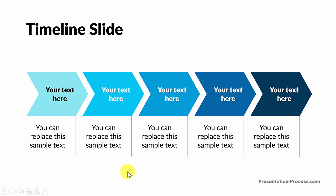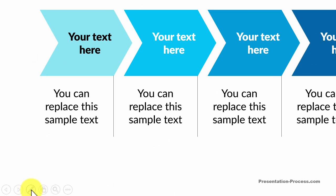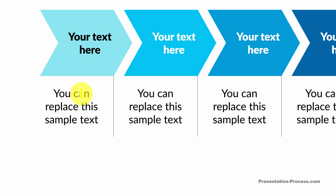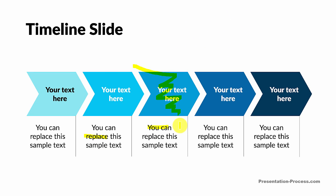One last trick to help you make a lasting impression is the ability to use a highlighter. Move your cursor to the bottom edge of your slide and then to the left, and you will see an option. Click on it and you will find the highlighter option. Click on it and your cursor turns into a highlighter, which you can use to highlight text or a part of a graphic to draw your audience's attention to a specific part of your slide.